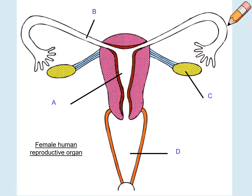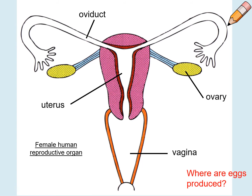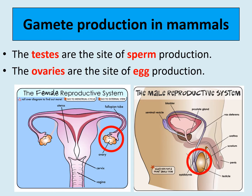Now for the female reproductive organs: A would be your uterus which is where your baby is held when it's developing; B is your oviduct which is the site of fertilization; C is your ovaries which produce your eggs; and D is the vagina where the penis is inserted during sexual reproduction. Eggs are produced in the ovaries — that is an important thing to know and remember.